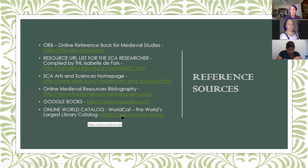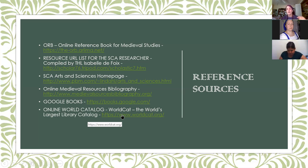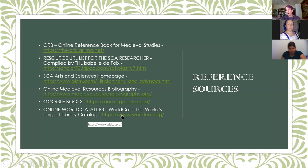A really good resource is WorldCat — a large library catalog online. You can research by different search categories and find the actual bibliographic record. It also shows which libraries have the resources, sorted from closest to farthest. With a free account, you can save your citations into a named list and then download it formatted as an APA, MLA, Turabian, or Chicago style citation.